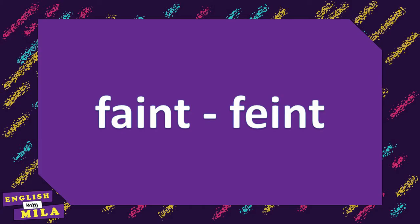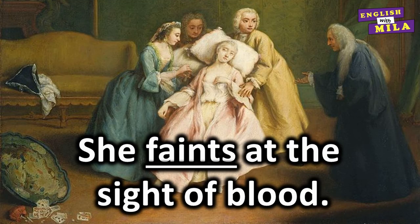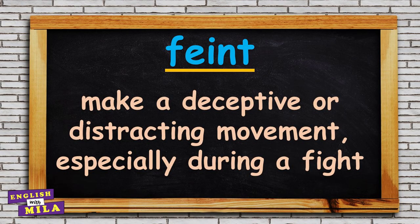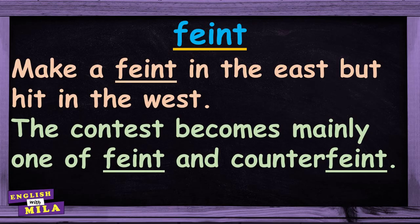One more pair: faint / feint. The verb 'to faint' has the meaning of suddenly becoming unconscious for a short time and usually falling down. As for the verb 'to feint,' it means to make a deceptive or distracting movement, especially during a fight or a game. For example: 'He feinted to pass the ball and then shot it into the net.' 'Make a feint in the east but then hit in the west.' 'The contest became mainly one of feint and counterfeint.'